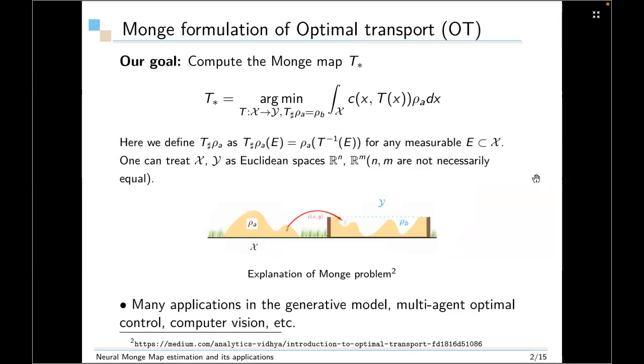So from the title, we can see that the paper is about using neural networks to compute Monge Map and about its applications. So to start with, we look at what is the Monge Map. It is defined to be the minimizer of an integral over C(X, T(X))ρ_A dX, and C(X, T(X)) is called the transport cost. It defines how much you need to pay for transporting the mass from X to TX. And it has to satisfy the constraint T push forward ρ_A equals to ρ_B. Here, the push forward map satisfies T push forward ρ_A(E) equals to ρ_A of T inverse of E, where E is a measurable set. And one can treat X, Y as Euclidean spaces R^n and R^m. n and m are not necessarily equal.